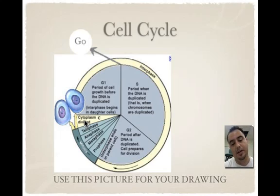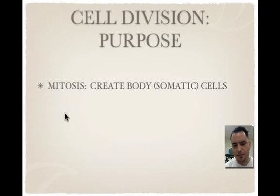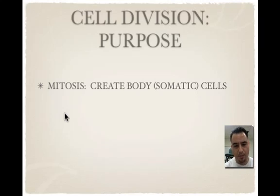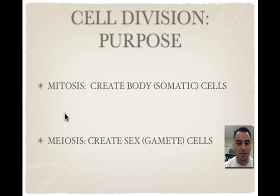Cytoplasm division is cytokinesis, and you'll end up with two cells. The cell division purpose: mitosis is really to create body cells, also called somatic cells. A way to remember that is think 'mito' — point to your toe and it reminds you that mitosis makes body cells. We also have meiosis, which makes gamete cells. Think sperm and egg made me — so meiosis is making sex cells, also called gamete cells.